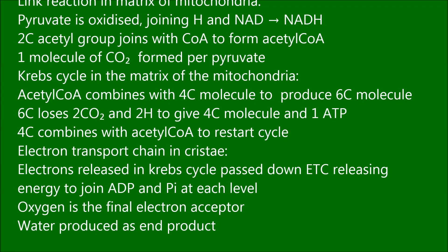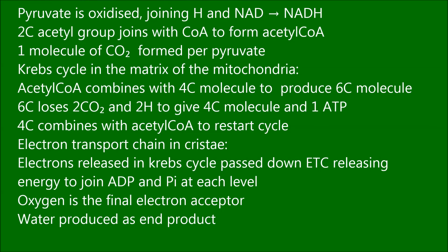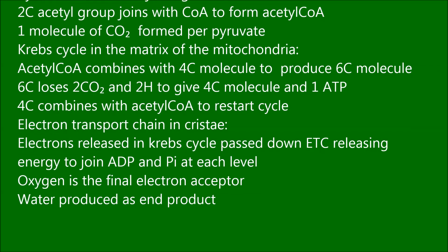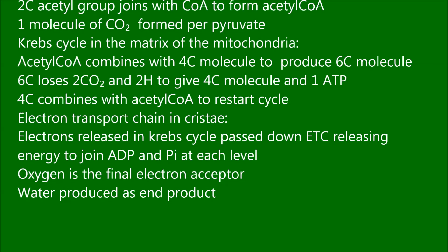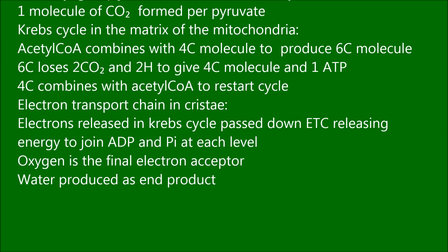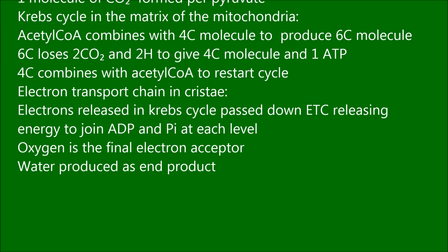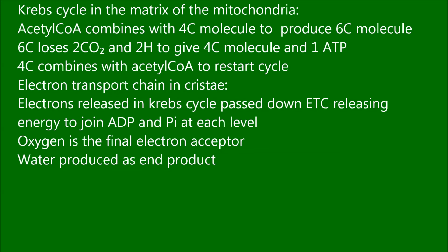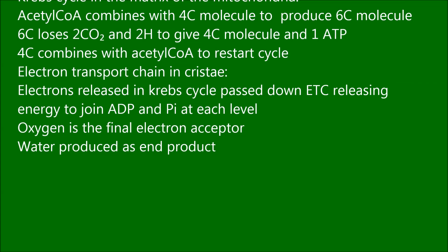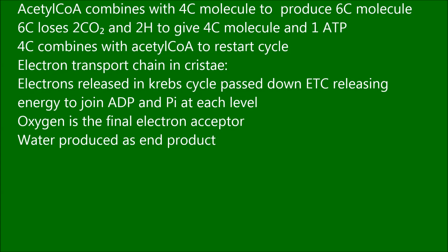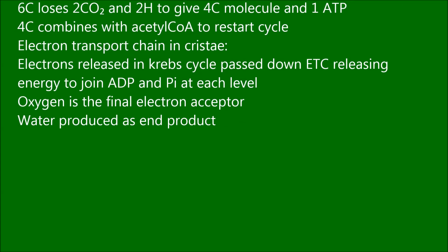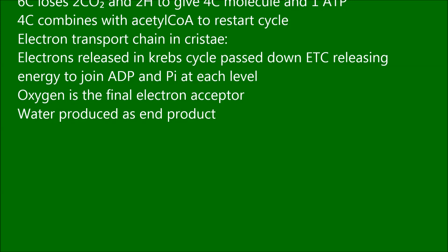Krebs cycle in the matrix of the mitochondria: acetyl coenzyme A combines with a 4-carbon molecule to produce a 6-carbon molecule. The 6C molecule loses 2 carbon dioxide and 2 hydrogens to give a 4C molecule and 1 ATP. The 4C molecule combines with acetyl coenzyme A to restart the cycle.